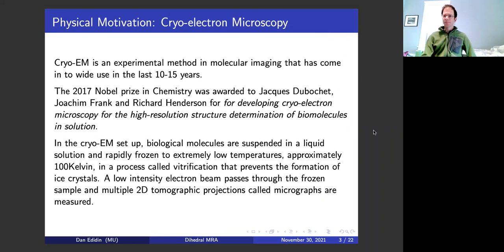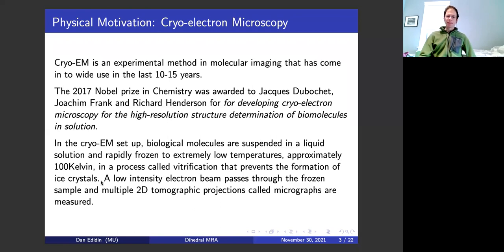In cryo-EM, biological molecules are suspended in a liquid solution and rapidly frozen to extremely low temperatures — about 100 Kelvin. This process is called vitrification, which is what Du Bochet did. His first papers on this were about 1980. The main thing is it prevents formation of ice crystals, which is very good for biological molecules. Then you zap it with a low intensity electron beam and measure multiple projections.